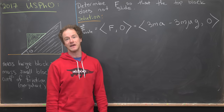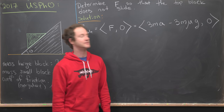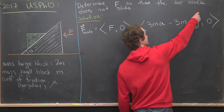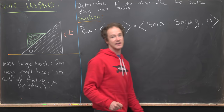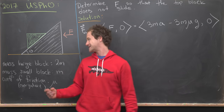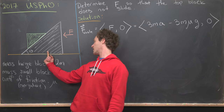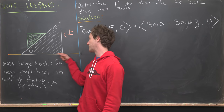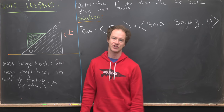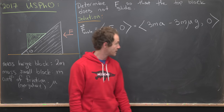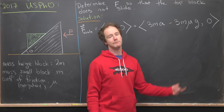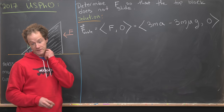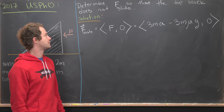So why is it 3m·mu·g? Well, 3mg is the normal force with respect to the direction of motion — the full weight of the system — and then mu is our coefficient of friction. That's our whole-system setup.